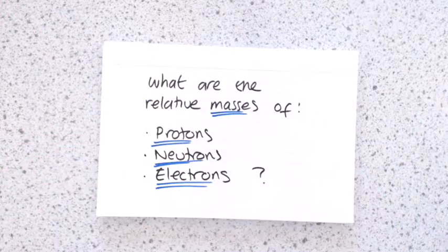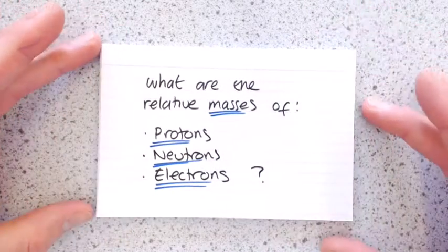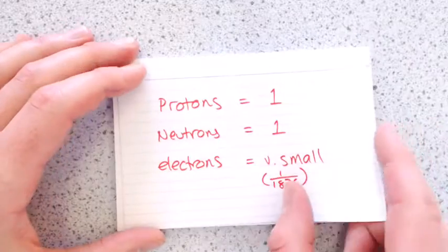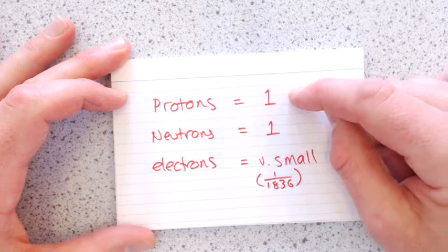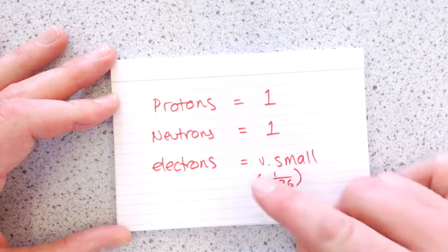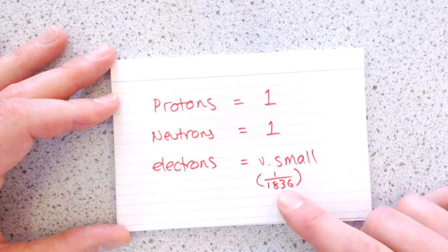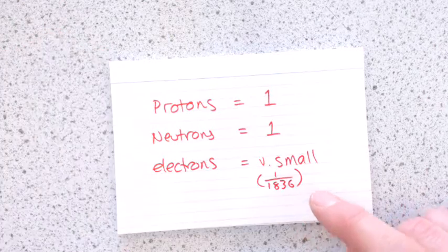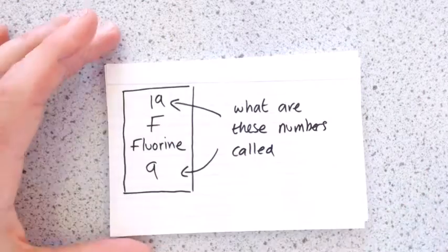So what are the relative masses of protons, neutrons, and electrons? Protons have a relative mass of one, neutrons have a relative mass of one, electrons essentially it's zero, very small. If you want to be really precise about it, it's 1,836.